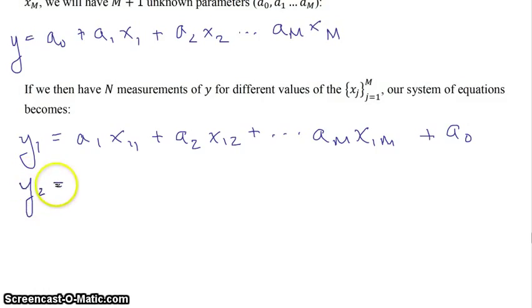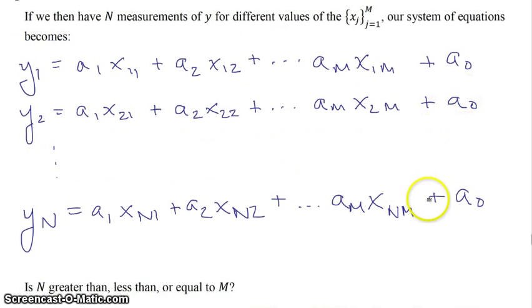And then so you have that being your first data point. Your second data point would be y2 is equal to a1 times x21. So your second measurement of x1 plus a2 x22 plus dot dot dot, and so on and so forth. So in this case, we have n equations and m unknowns. m plus 1, sorry. So you have a0 and then a1, a2, dot dot dot, all the way up to am.